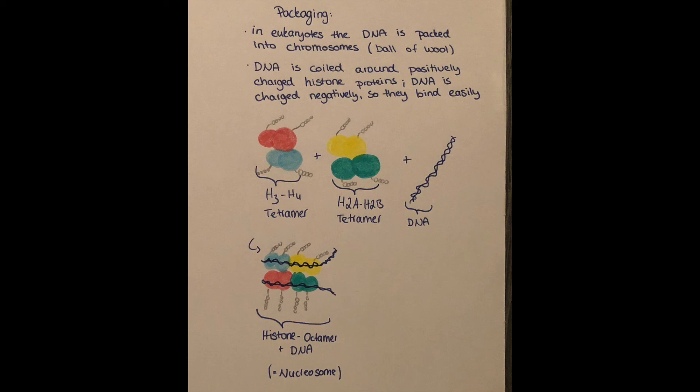I drew down here in the poster that there are different kinds of histones which together build an octamer. So there's the H3 and H4 histones, which together build a tetramer. So there's a dimer of each the H3 and the H4. They together build a tetramer. And then there's another tetramer of two dimers of the H2A and H2B histones. They together build a histone octamer.